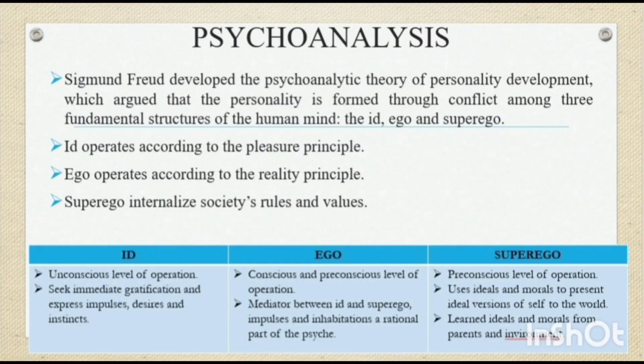Psychoanalysis theory was given by Sigmund Freud. He developed the psychoanalytical theory of personality development, which argued that the personality is formed through conflict among three fundamental structures of the human mind: id, ego, and superego. The id operates according to the pleasure principle, the ego operates according to the reality principle, and the superego internalizes society's rules and values.